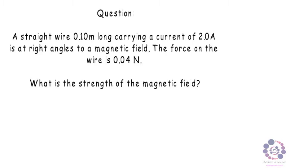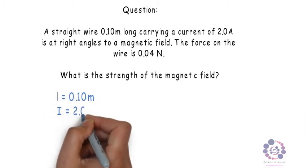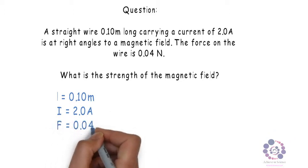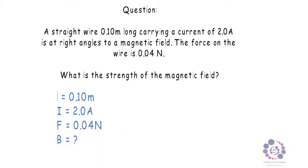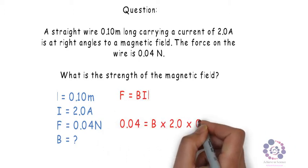First of all, write out what you know. Well, you know the length is 0.10 meters. You know the current is 2 amps. You know the force is 0.04 newtons and you will be working out B. Now use the equation. Input the numbers that you know.